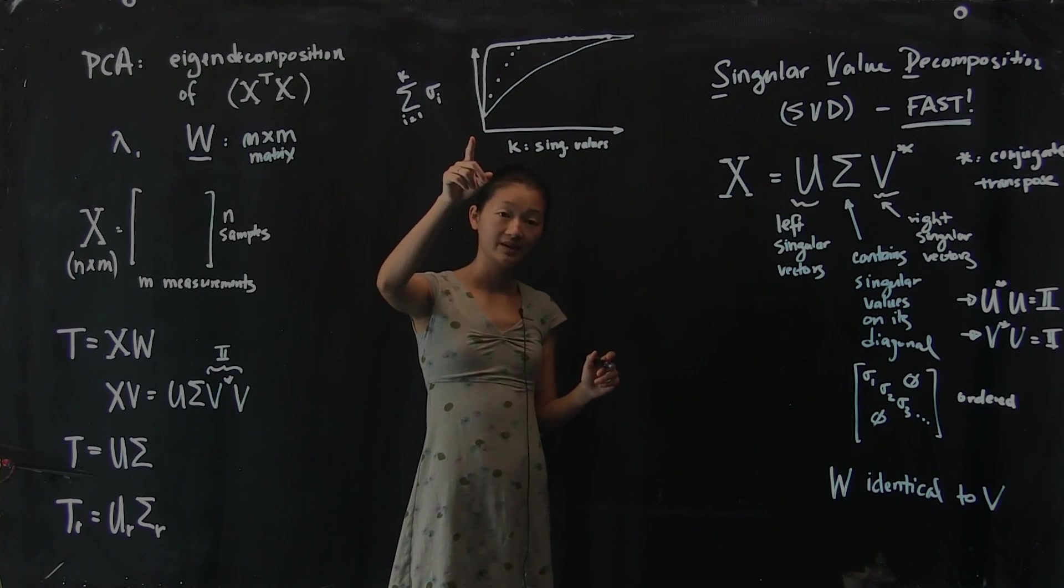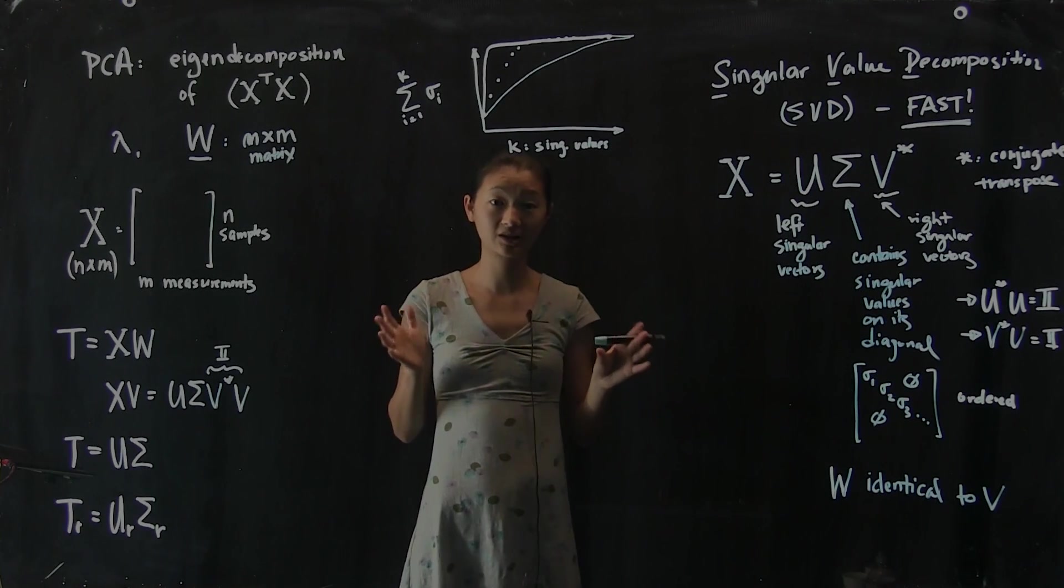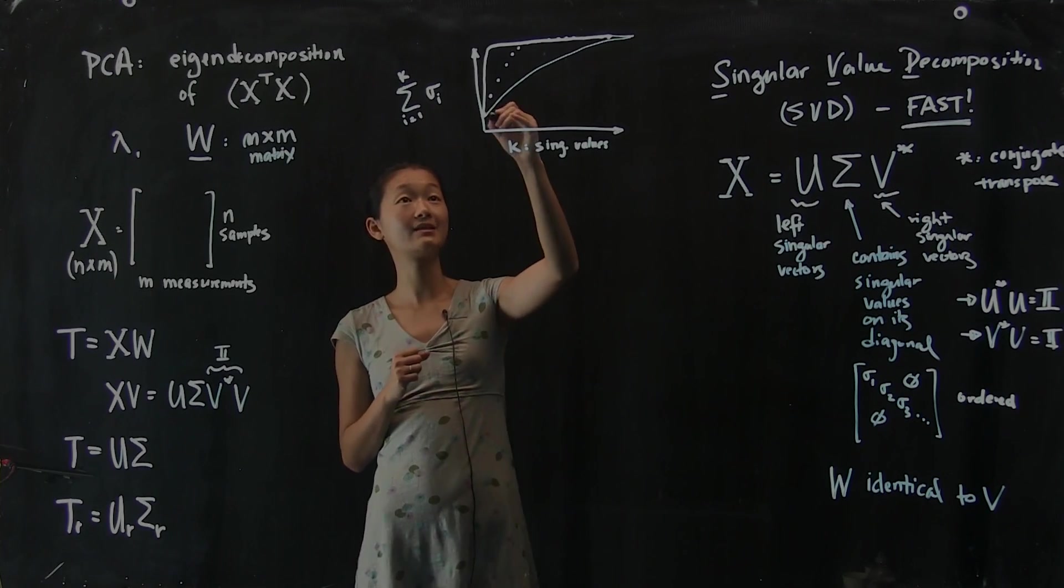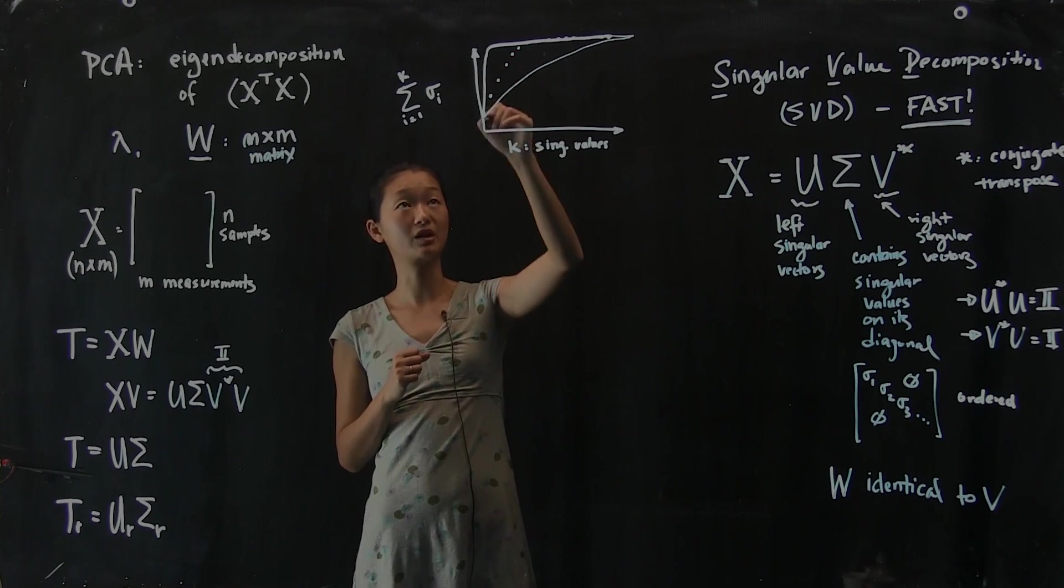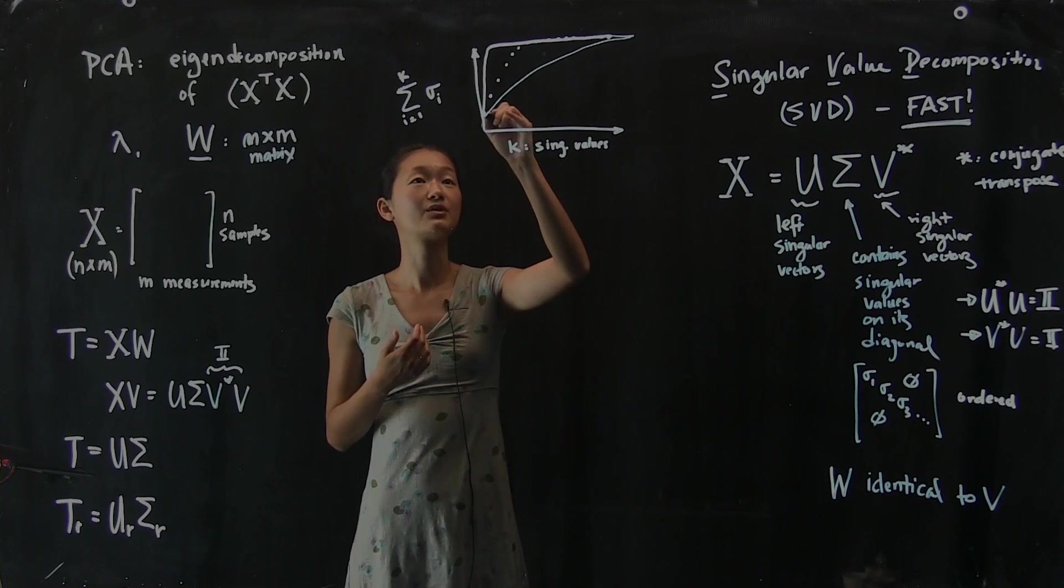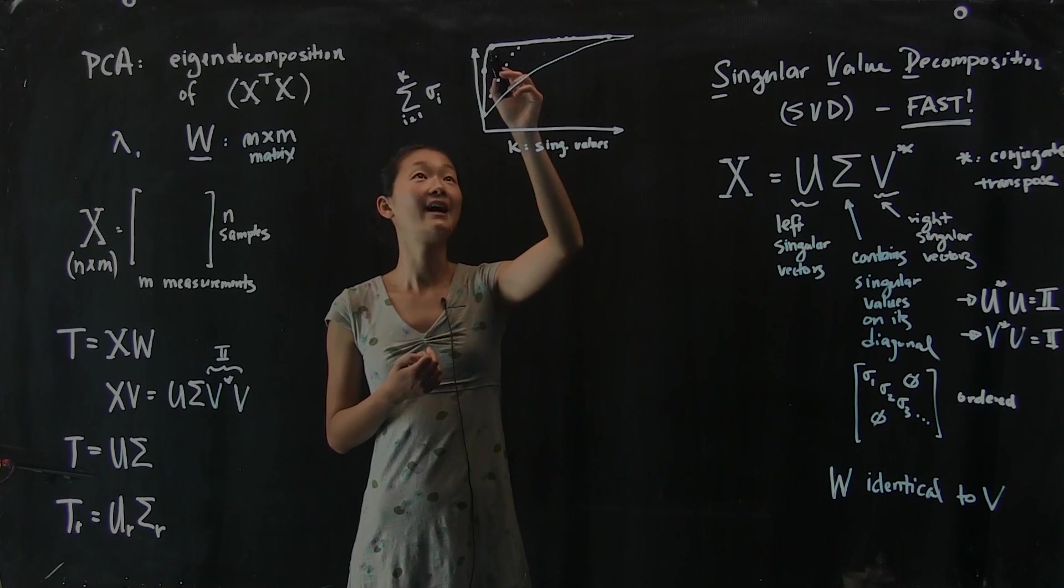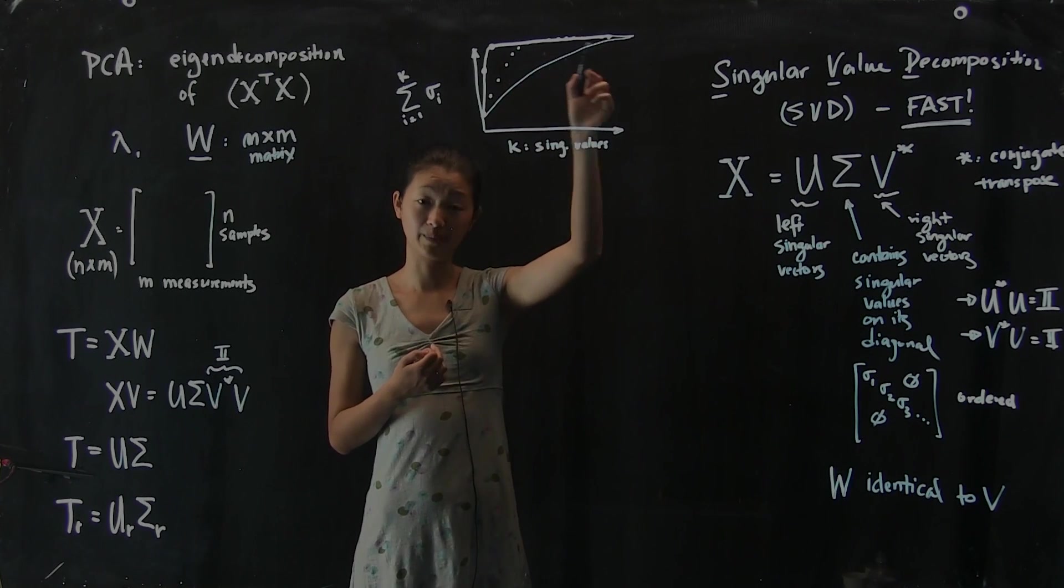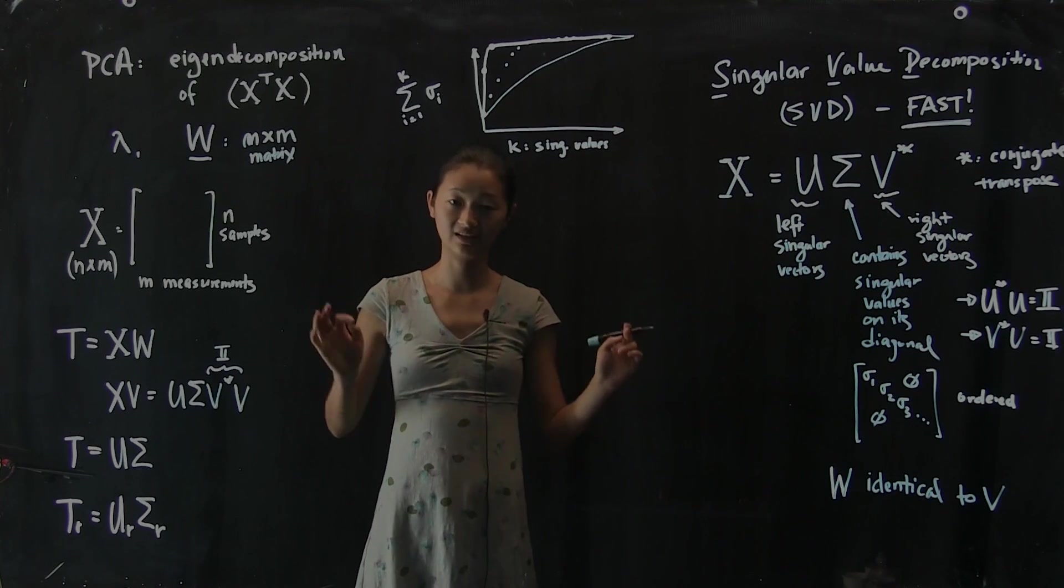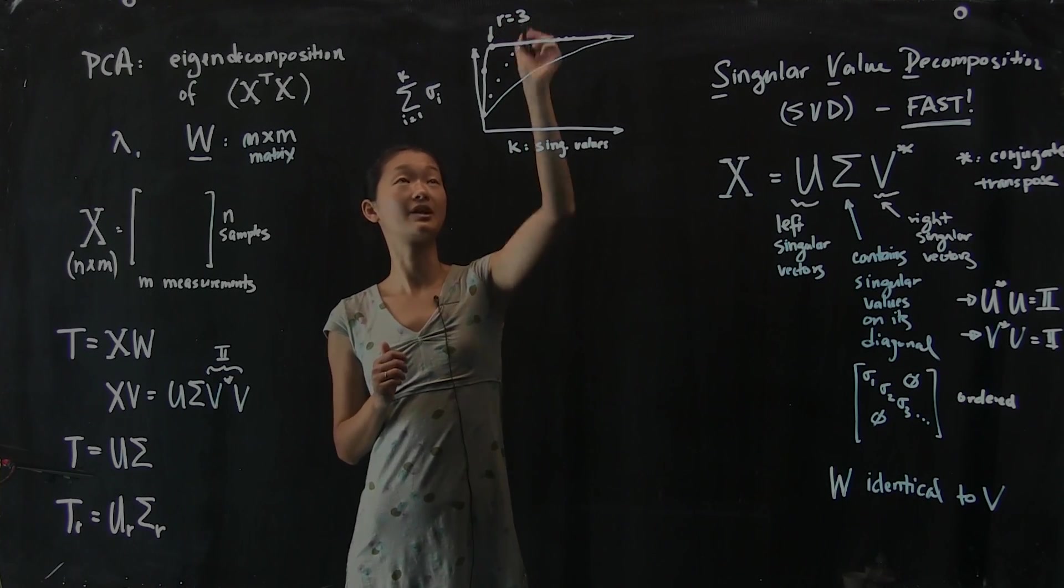Now the shape of that curve tells you a lot about what's happening in the system. It tells you about how low dimensional the system actually is, how many numbers of singular values, what's this K that you can actually get away with truncating. Because in the case of this really sharp curve here, where you have a really sharp elbow or shoulder in the data, you can say that here's one singular value, here's two singular values, here's three singular values. Really, that's it. Adding any more singular values, adding any more principal components to my explanation of the data really is not going to help me because there's no more variance in the data to be explained. I can pretty safely truncate this case at r equals 3.